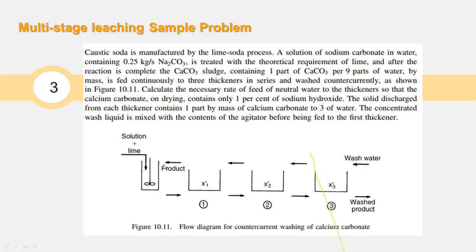Since the solid from the agitator is introduced into the first equipment, we number our thickeners in a multistage thickening process based on where the solid is being introduced — so this is thickener 1, thickener 2, and thickener 3. This will be a step-by-step material balance solution, meaning we're going to do material balance per thickener: an overall material balance and then individual material balances on each thickener.